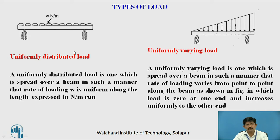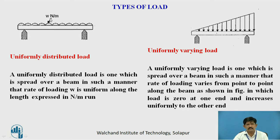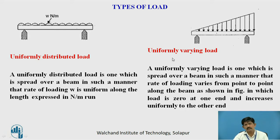A uniformly distributed load is one which is spread over a beam such that the rate of loading is uniform along the length. The unit is expressed in W kN per meter, meaning at each meter the load will be W kN. A uniformly varying load is one which is spread over the beam such that the rate of loading varies from point to point.